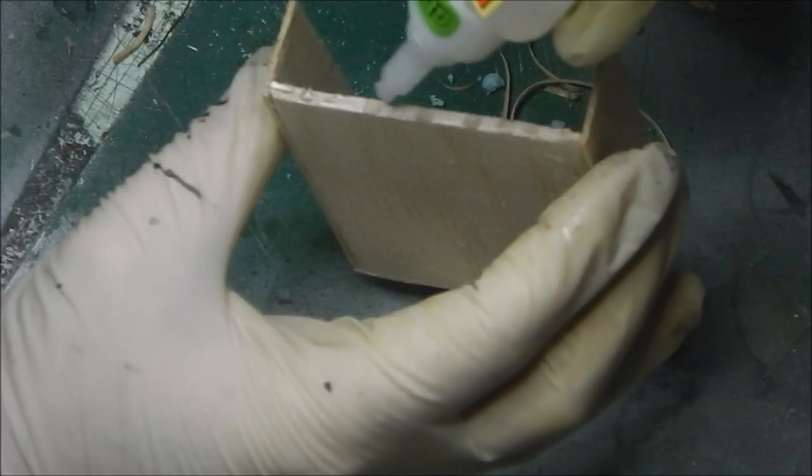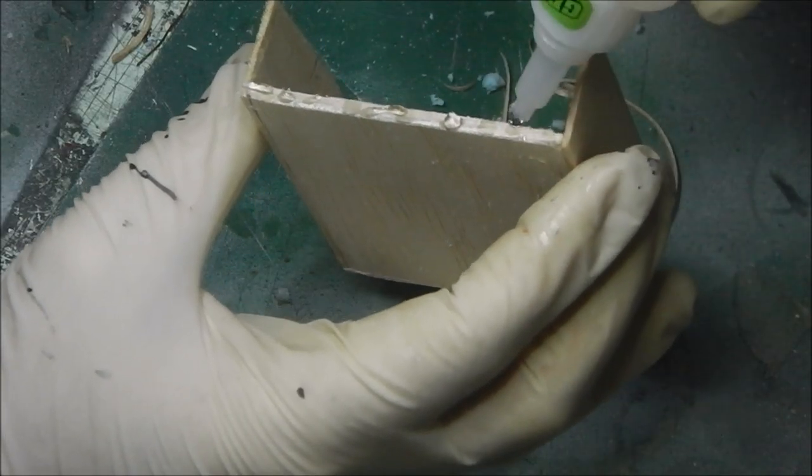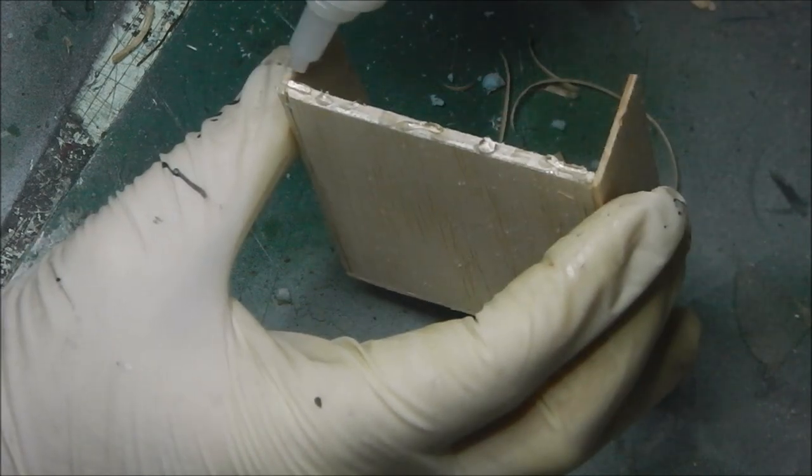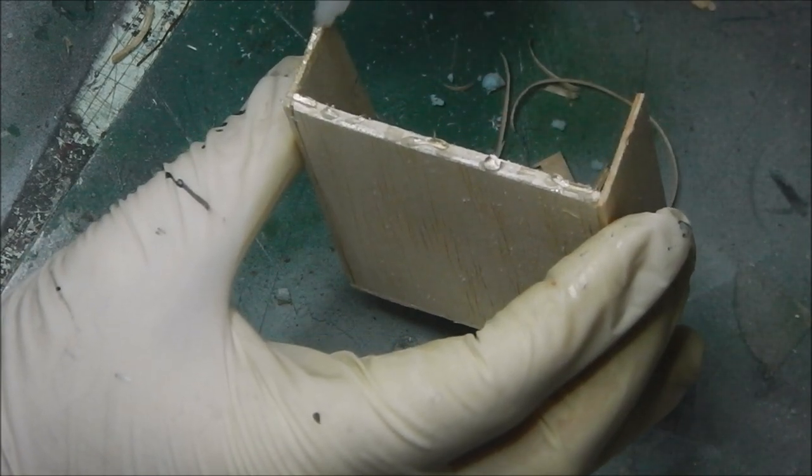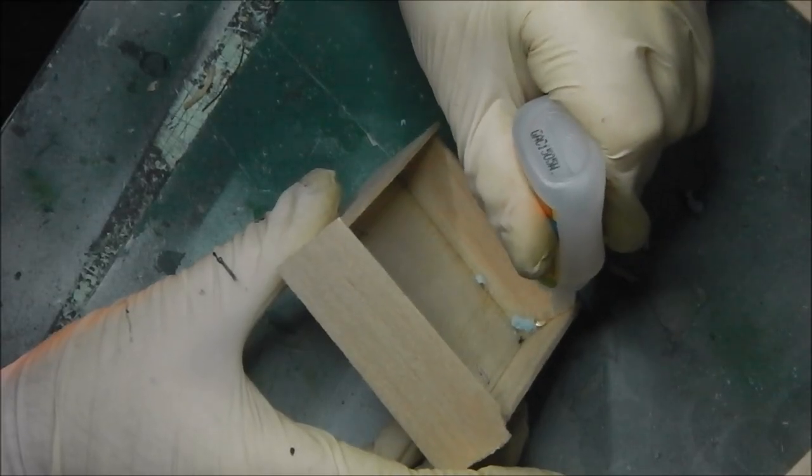Now I'm using some Gorilla Glue to glue the base together. Balsa wood will take superglue pretty well, and especially a good brand of Gorilla Glue will be more than adequate. I'm also using a bit of Gorilla Glue inside the joints to reinforce them.